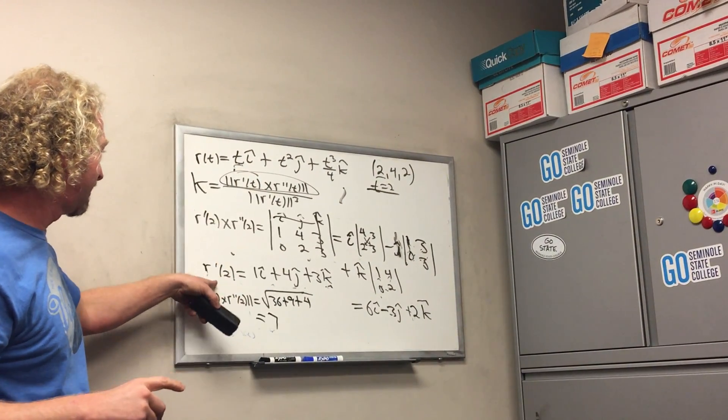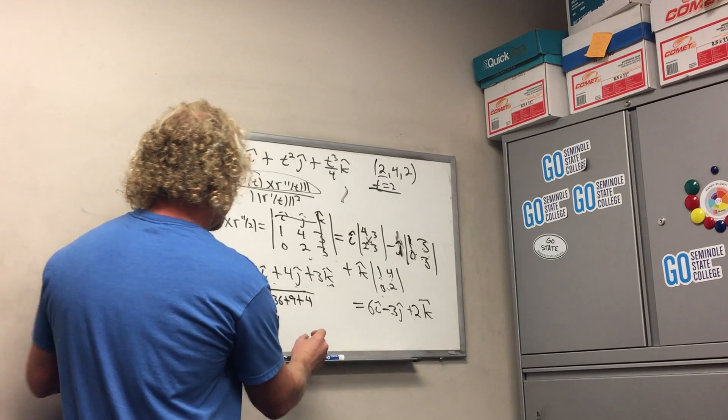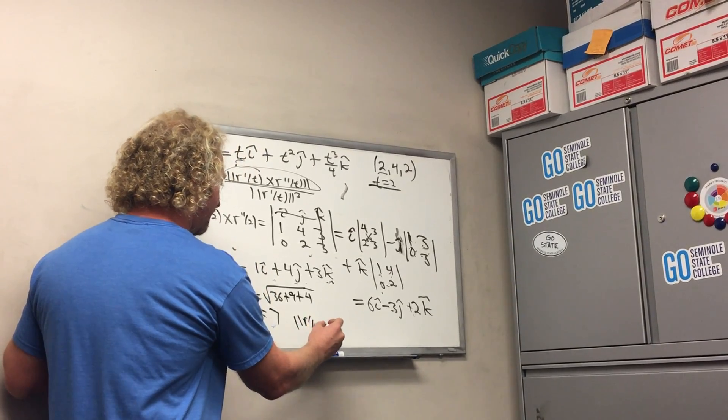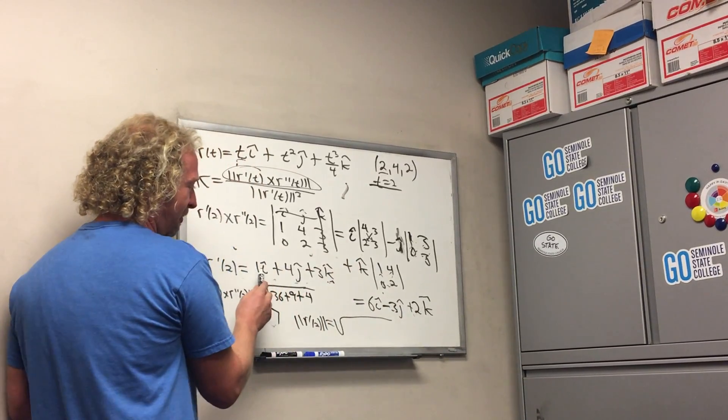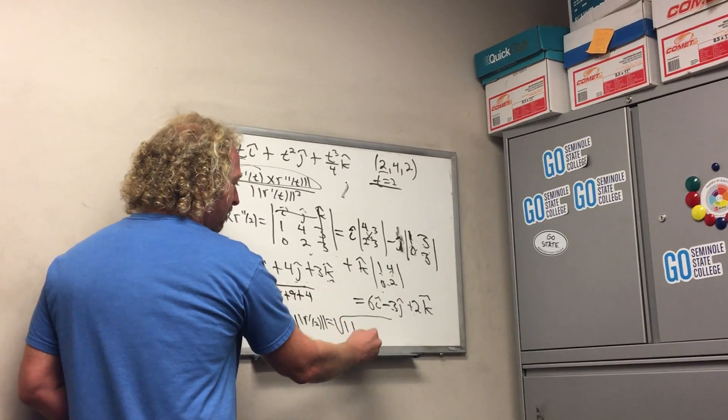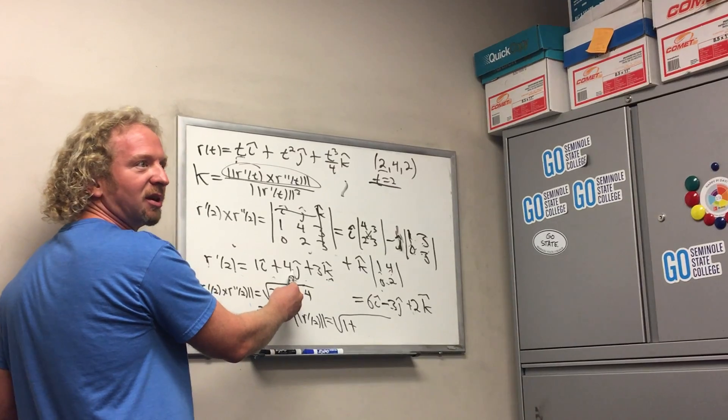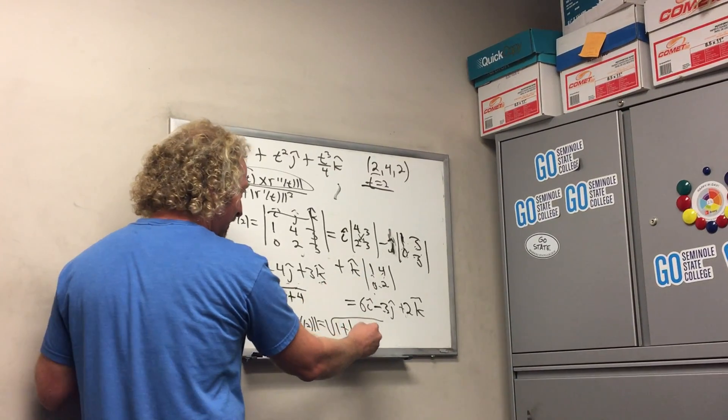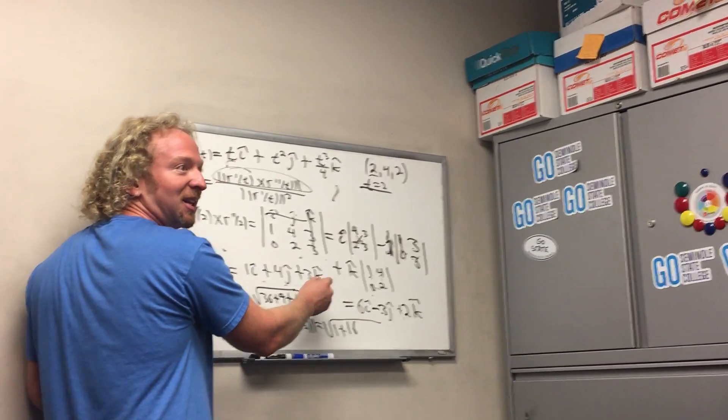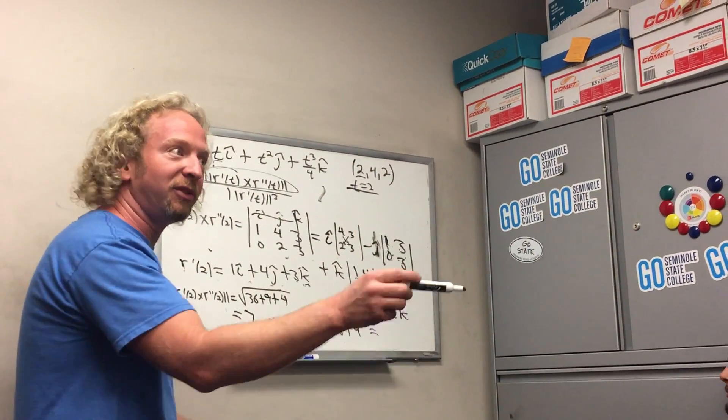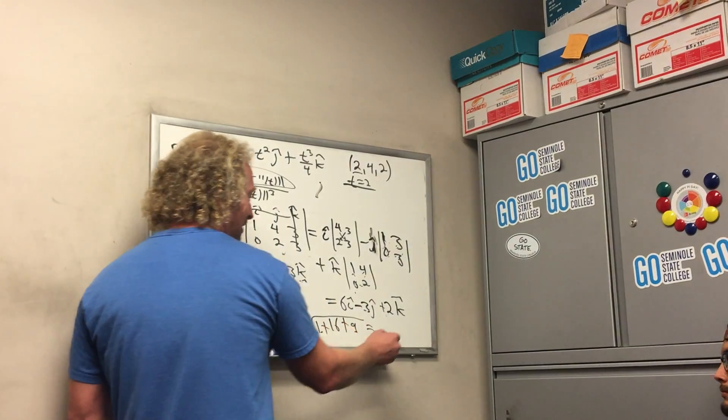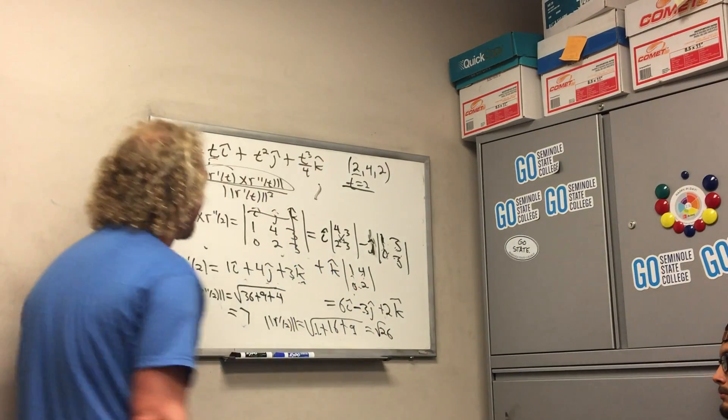Now we just got to find the magnitude of this bad boy. So the magnitude of r prime of 2. We'll cube it in a minute. So it would be 1 squared is 1, plus 4 squared which is 16, plus 3 squared is 9. I've already messed up like 3 times, I don't want to mess up again. That's 26. 10 plus 16 is 26. Good stuff.